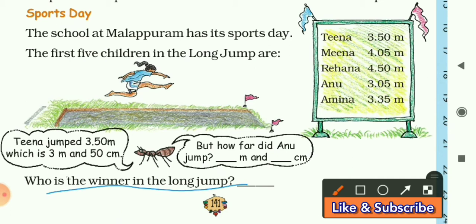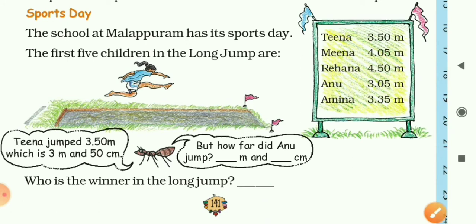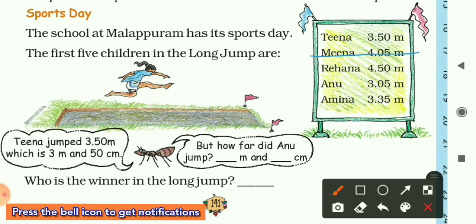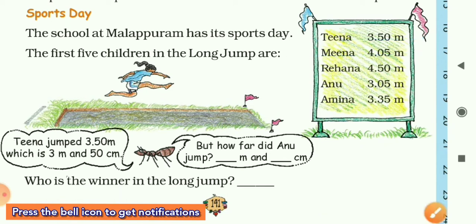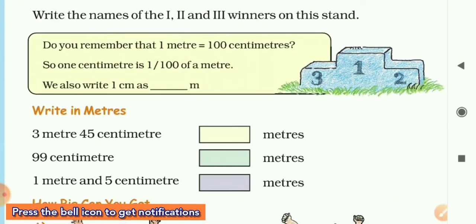Who is the winner in this long jump? The winner is Rihanna with a score of 4.50 meter, or 4 meter and 50 centimeter. Second place is Meena with a score of 4.05 meter, and third place is Tina with a score of 3.50 meter. In this way we have our top three scorers.